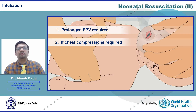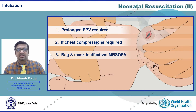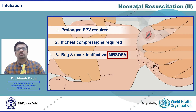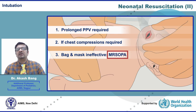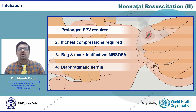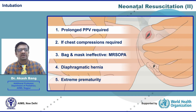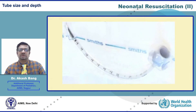If PPV is ineffective, then as part of the ventilation corrective steps of MR. SOPA, the 'A' — which stands for alternative airway — indicates intubation. Intubation is also indicated in special circumstances like diaphragmatic hernia or in extreme prematurity. Let us briefly see how to prepare for intubation.